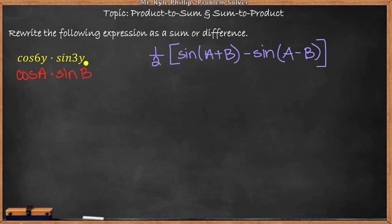So here we have 1 half times sine of 6y plus 3y minus sine of 6y minus 3y.